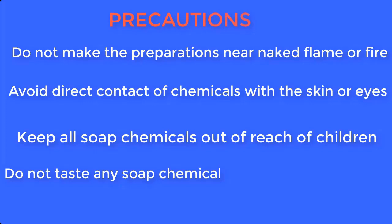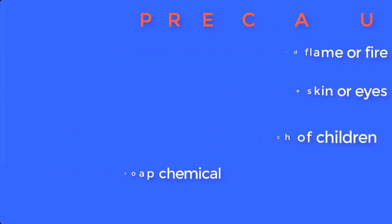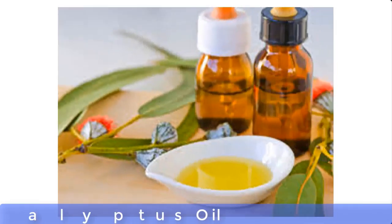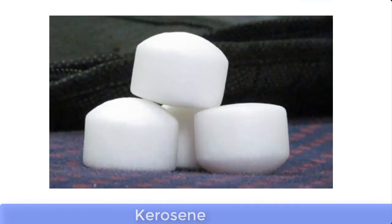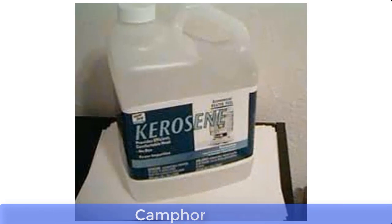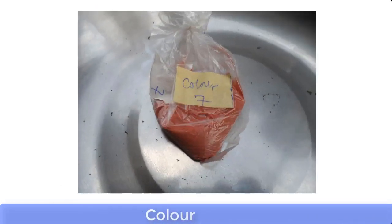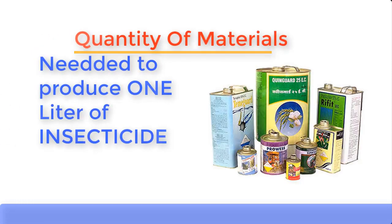Now let's go through the list of materials needed for this production. Number one is compact, number two is eucalyptus oil, number three is camphor, number four is kerosene, number five is isopropyl alcohol also known as IPA, and number six is color. Please note that the solvent used for this preparation is kerosene.